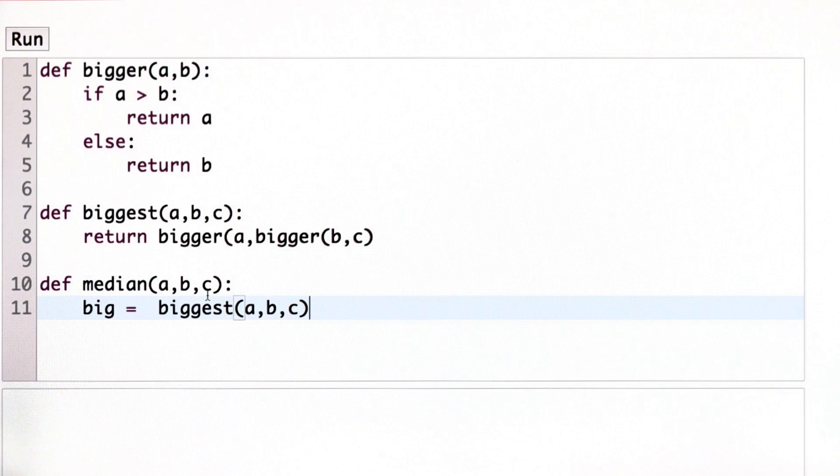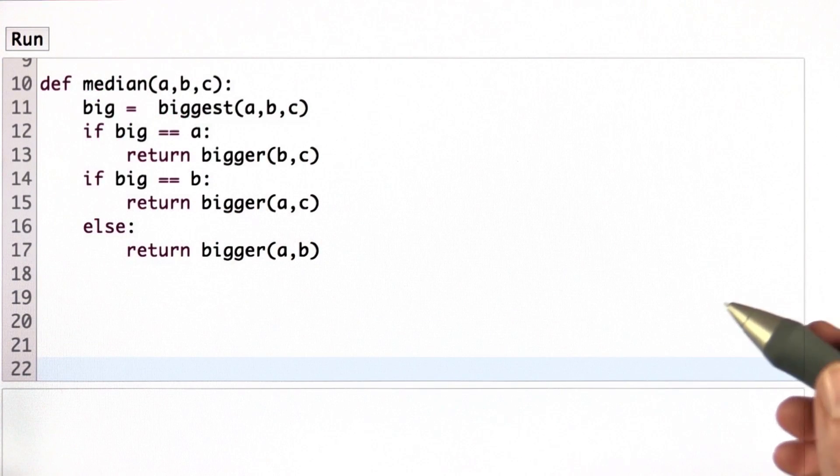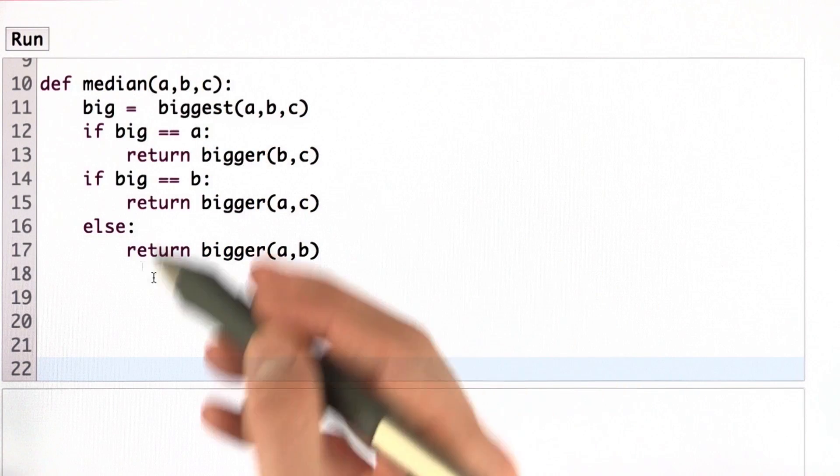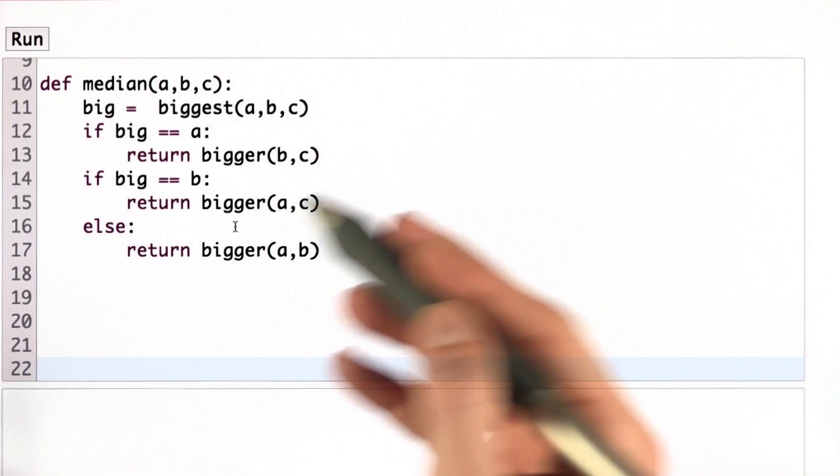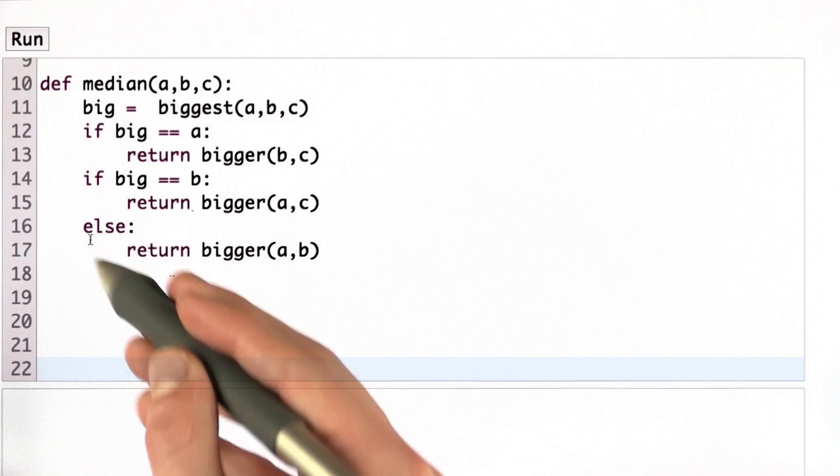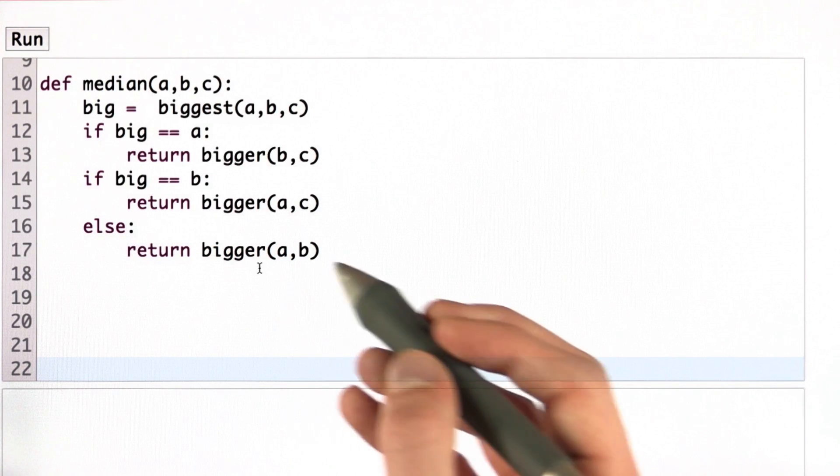From here, we enumerate the possible cases. As I described earlier, if A is the biggest number, we want to return the bigger number of B and C. If B is the biggest number, we want to return the bigger number of A and C. And lastly, if C is the biggest number, which is satisfied by the else here, we want to return the bigger number of A and B.